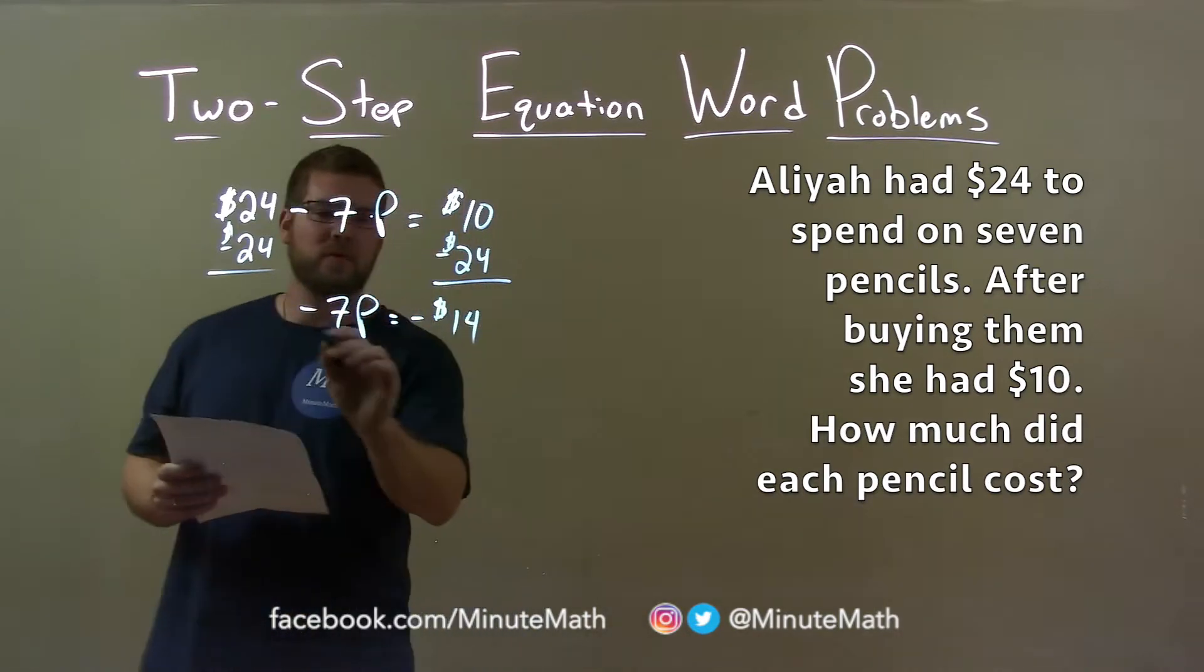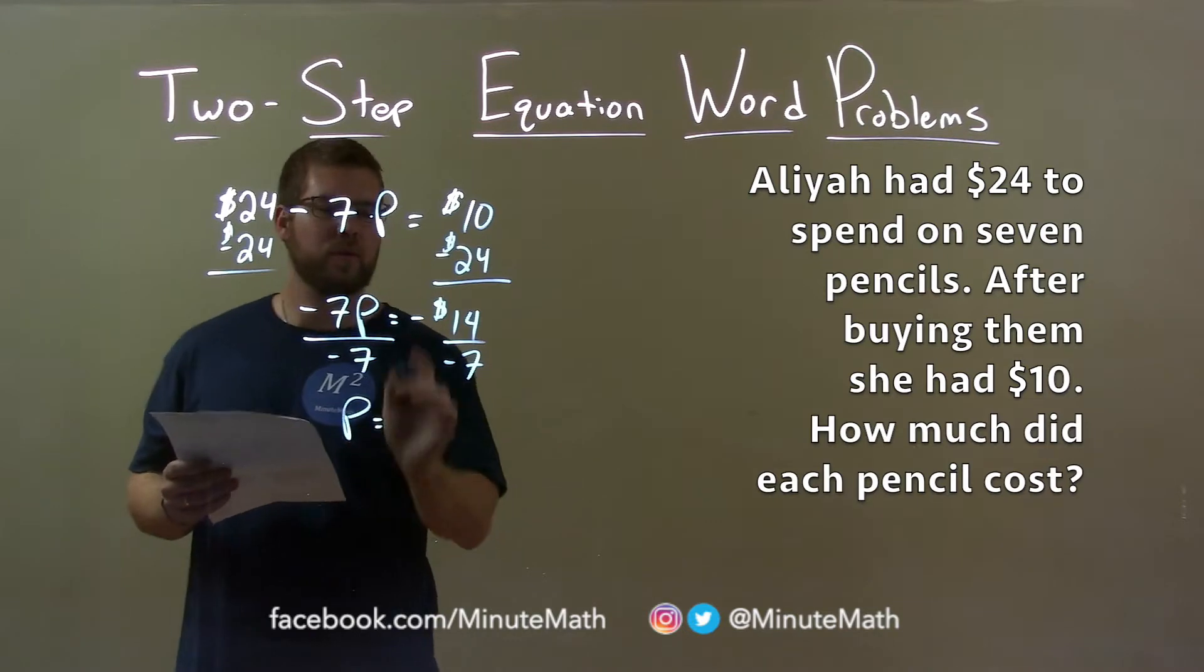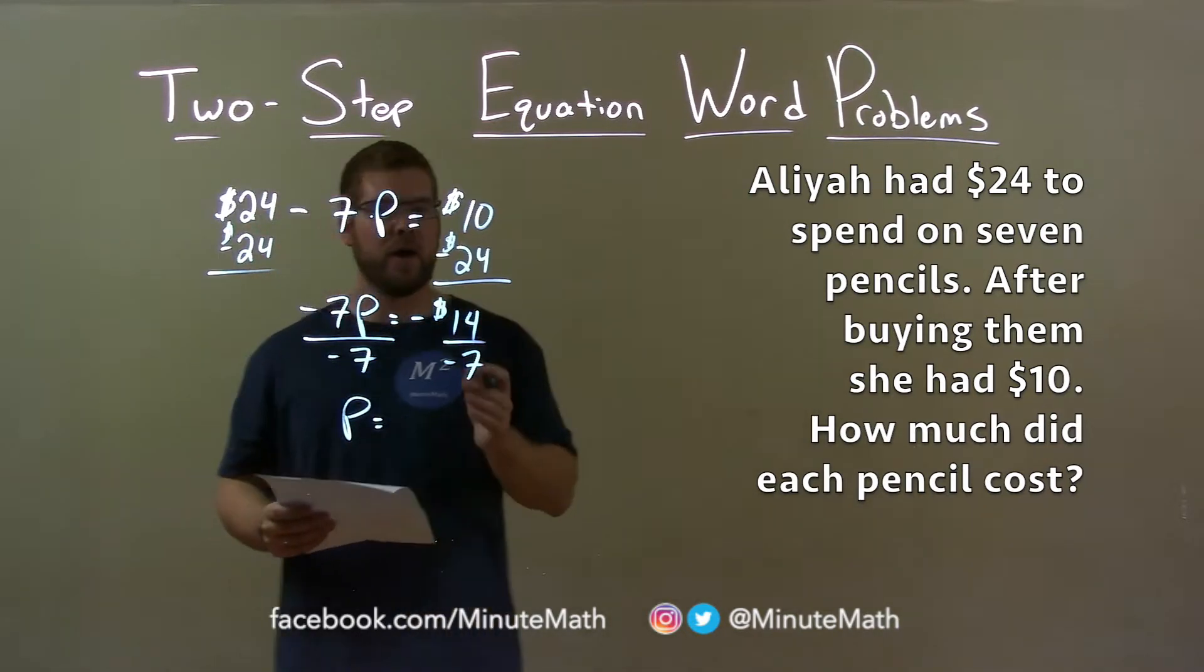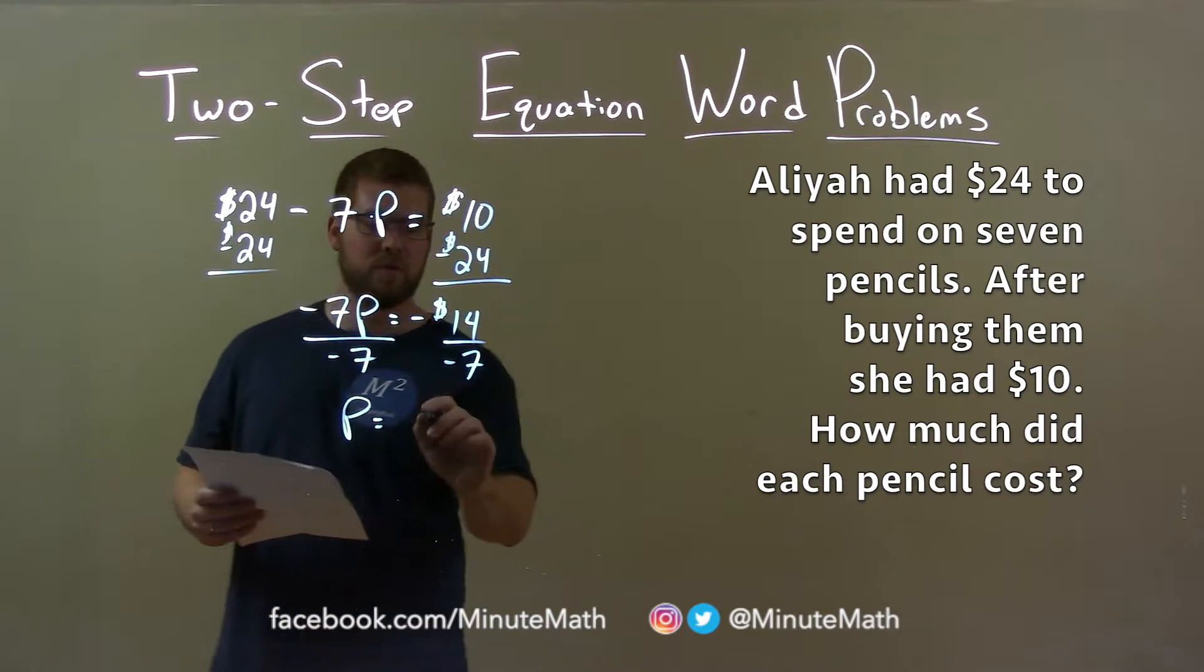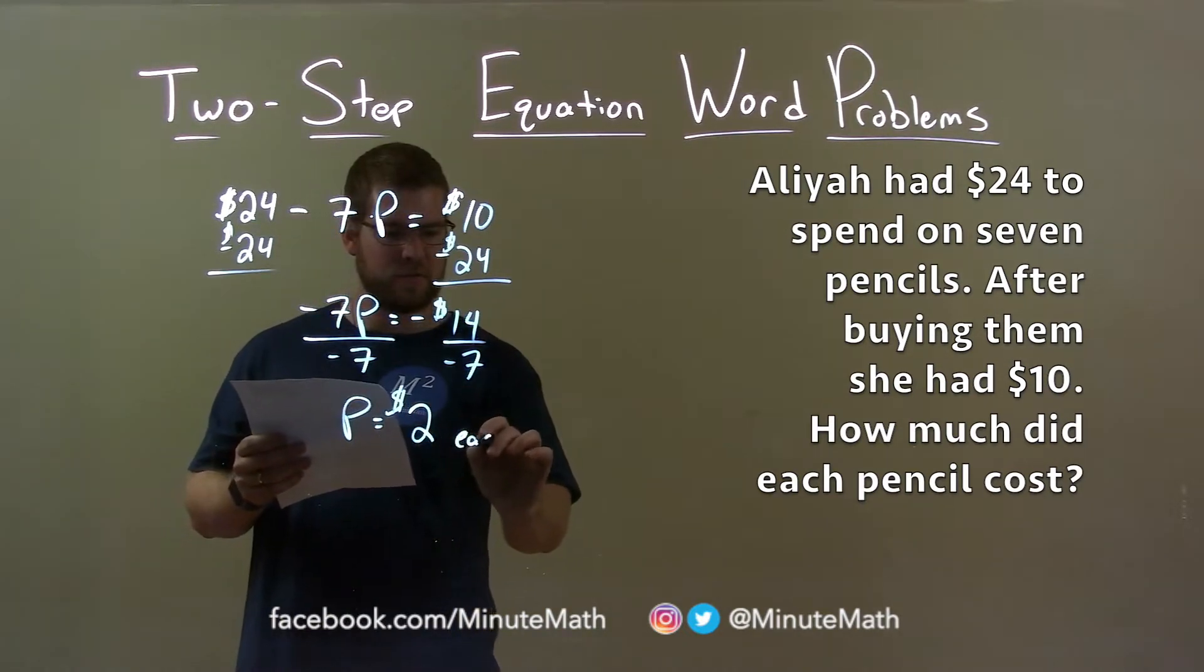Then, we want to divide both sides by negative 7, leaving me the price per pencil left over. A negative divided by negative is a positive, and 14 divided by 7 is 2. So, we have $2, and that's the price: $2 for each pencil.